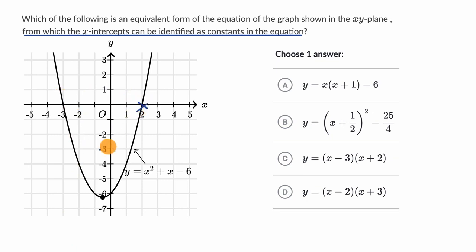We have an x-intercept right over here. X-intercepts happen when y is equal to zero, when we intersect the x-axis. So one happens at x equals two, and then another here happens at x is equal to negative three.